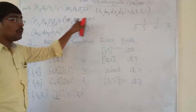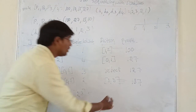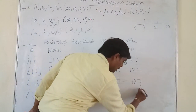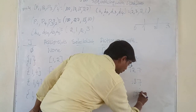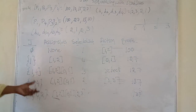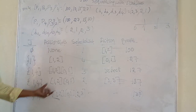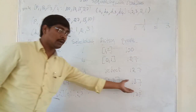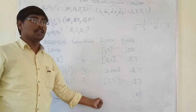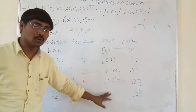All 4 jobs are now completed. We are getting a total profit of 137. Jobs 1, 4, and 2 are executed to get a total profit of 137. This is job sequencing with deadlines. Thank you.